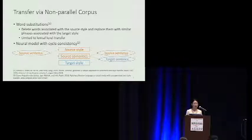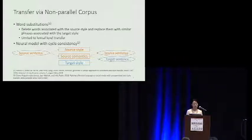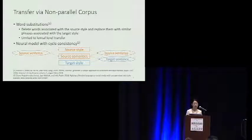Here are some recent approaches to style transfer using non-parallel data. One work is based on word substitution — it assumes that word usage is a strong signal of text style, and proposes to replace words associated with the source style with similar words more relevant to the target style. However, this approach is limited to lexical-level transfer and does not change the syntactic structure. Other works build neural models that decompose a sentence into a style component and a semantic component, then recombine the source semantics with the target style to generate a target sentence.